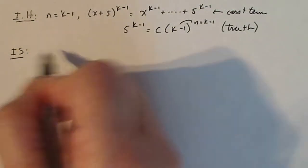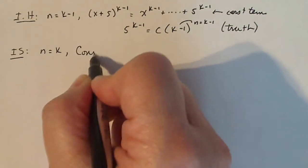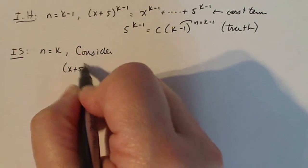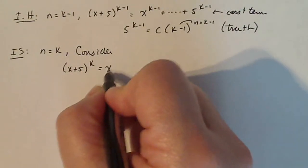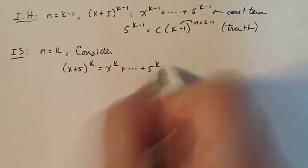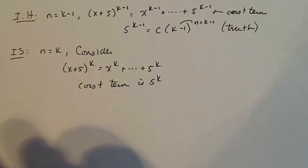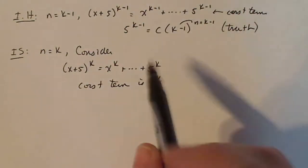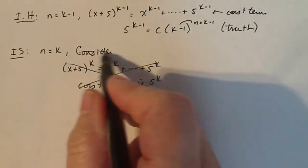Okay, so my inductive step, I'm going to keep following with the same pattern. My inductive step is now where n is equal to k. So I have to think about (x+5)^k. Now when I expand out (x+5)^k, I'm going to get x^k plus a bunch of stuff plus 5^k. Now the constant term is 5^k, but we have to actually prove that it's true based on the inductive hypothesis, because we're asked to prove this by induction.